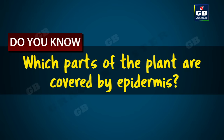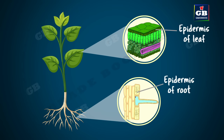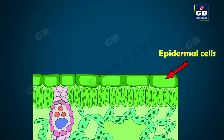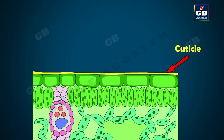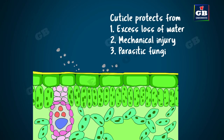All parts of the plant are covered by epidermis, but there is a difference between the epidermis covering the shoot system and the epidermis of the root system. The epidermal cells of the aerial parts secrete a waxy, water-resistant layer on their outer surface called the cuticle. It protects the plant parts from excess loss of water, mechanical injury, and from parasitic fungi.